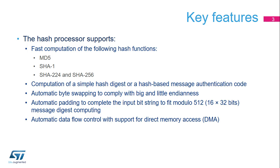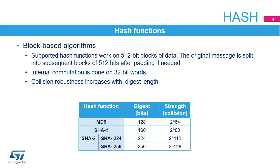The processor also supports automatic padding of input data for block alignment, and can be used in conjunction with the DMA for automatic processor feeding. All supported hash functions work on 512-bit blocks of data. The input message is split as many times as needed to feed the hash processor, and subsequent blocks are computed sequentially.